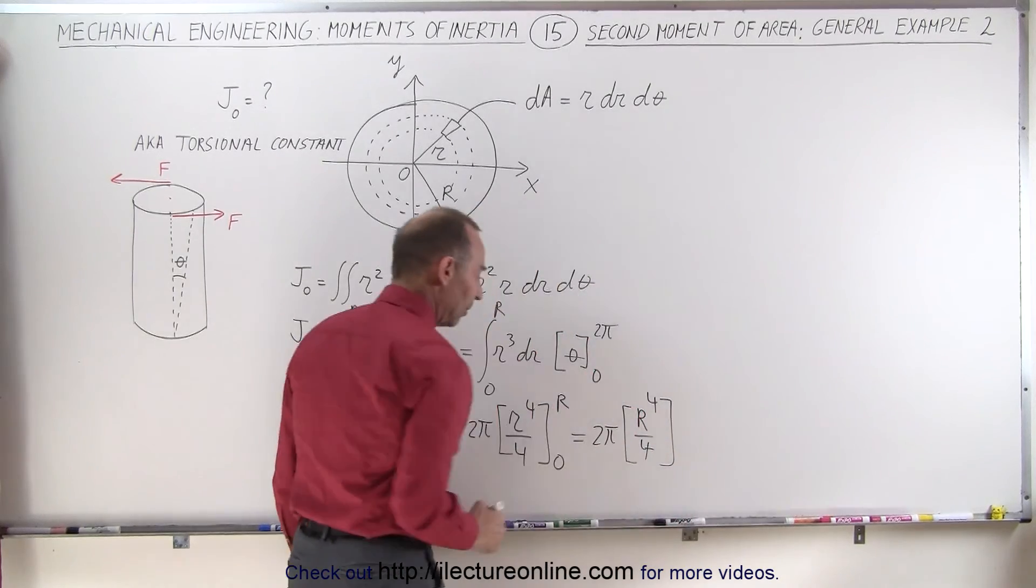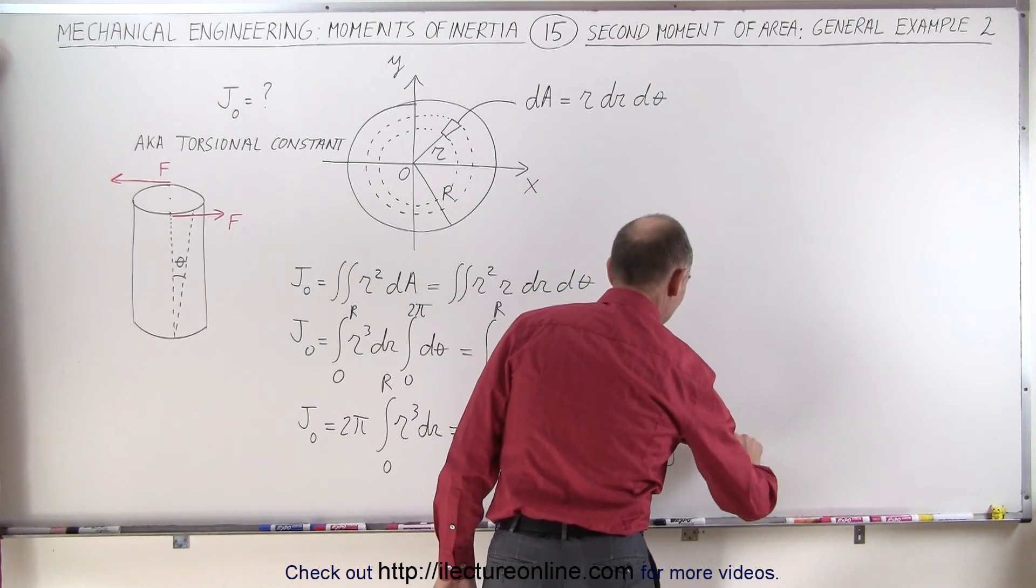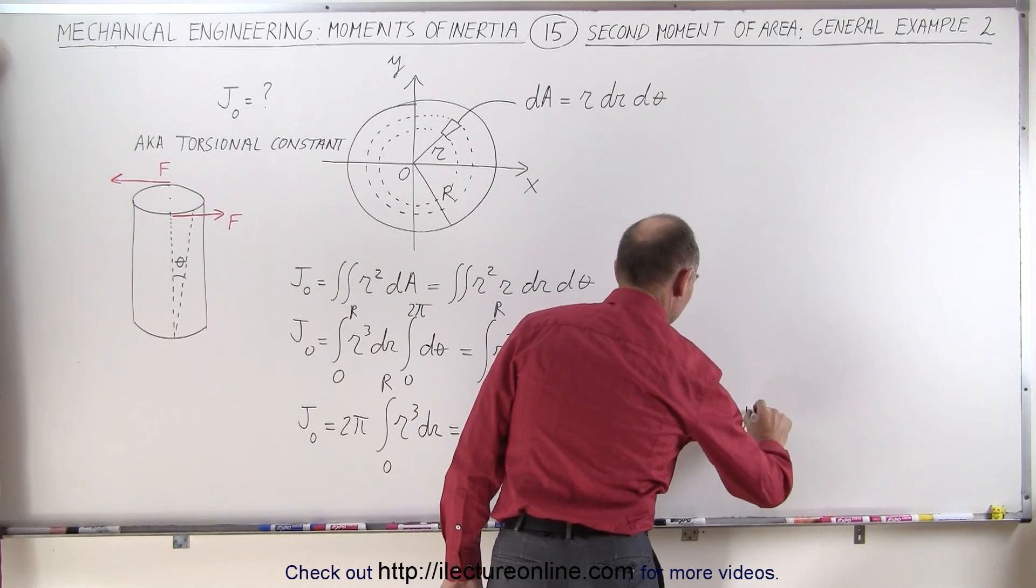And then, of course, you can simplify. We have a two in the numerator, four in the denominator. That would be equal to one-half pi r to the fourth power.